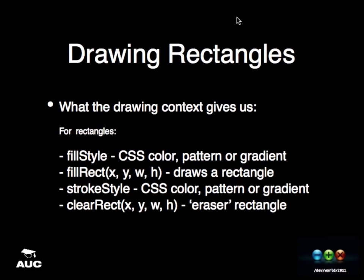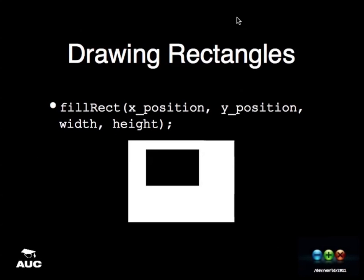The drawing context gives us a lot of functions to work with. fillStyle defines what style your rectangle's going to be filled with. fillRect actually draws a filled rectangle. strokeStyle controls the actual line — this can be a CSS color, a pattern, or a gradient. clearRect is something funny where you can define a rectangle that works like an eraser — you can plot this eraser rectangle across and just wipe everything in that space. For a simple rectangle, you call fillRect, give it the x and y position, a width and height, and it will plot it.